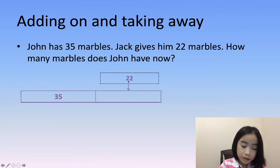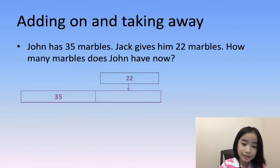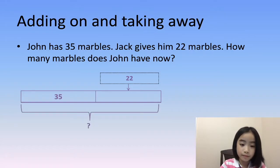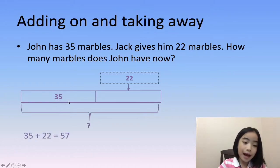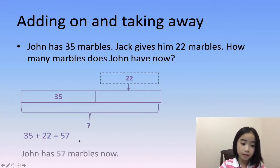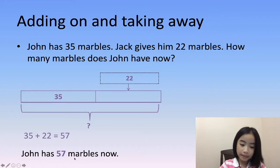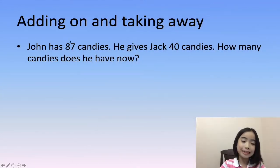So this is an addition problem. 35 plus 22 equals 57. John has 57 marbles now. Now let's do another example.